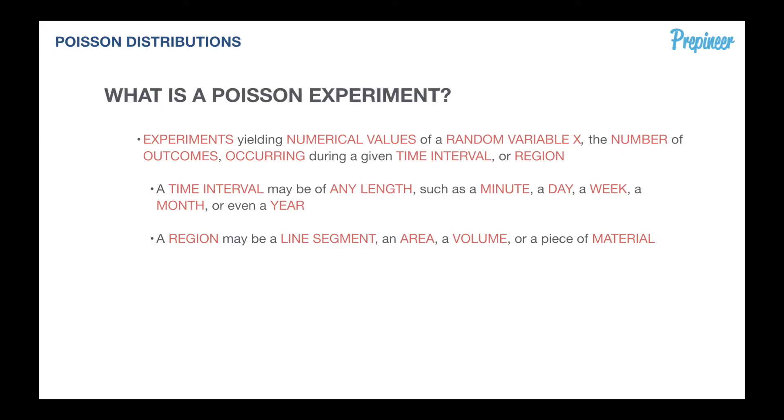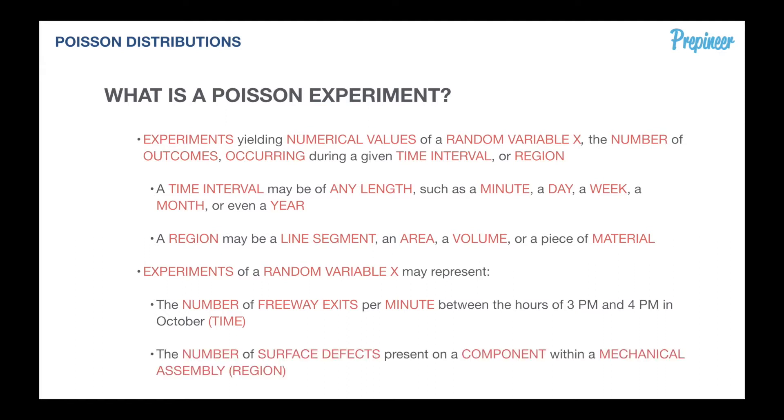A region may be a line segment, an area, a volume, a door, a garage, an intersection, or a piece of material. Experiments of a random variable X may represent things such as the number of freeway exits per minute between the hours of 3 PM and 4 PM in October, which is a time interval example. Or it can be the number of surface defects present on a component within a mechanical assembly, which is a region. That experiment can also follow a Poisson distribution, although not necessarily, but it may.